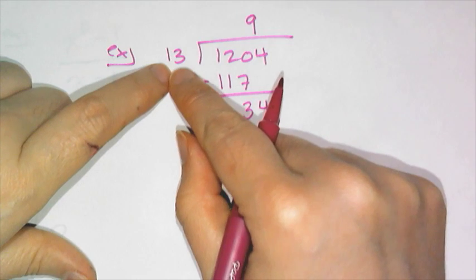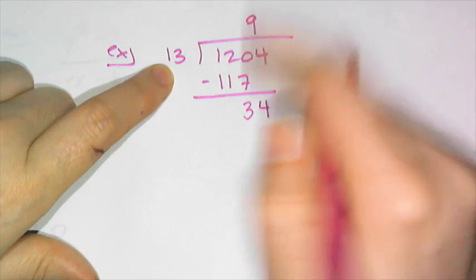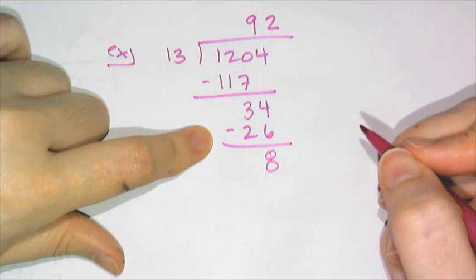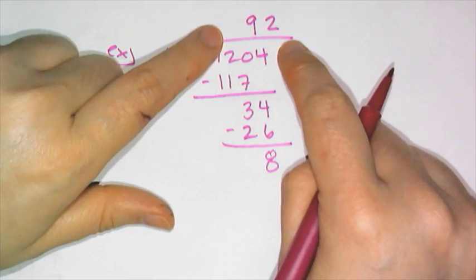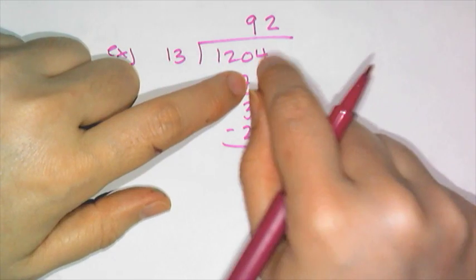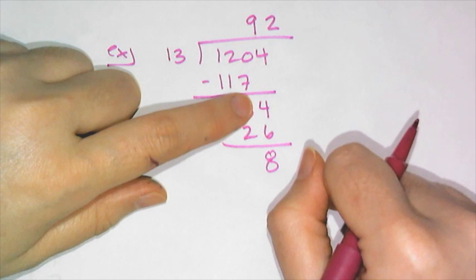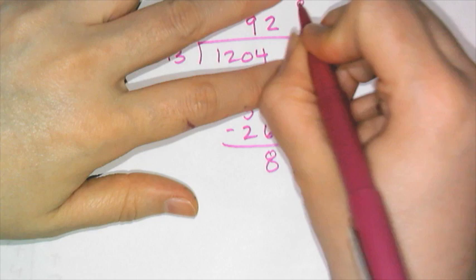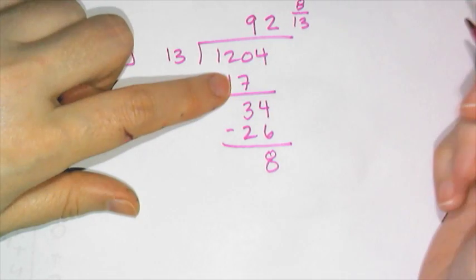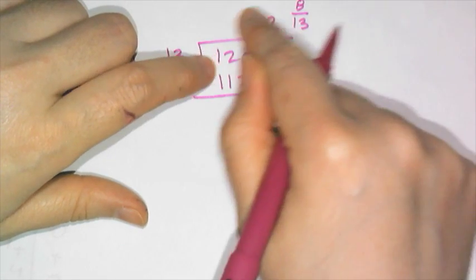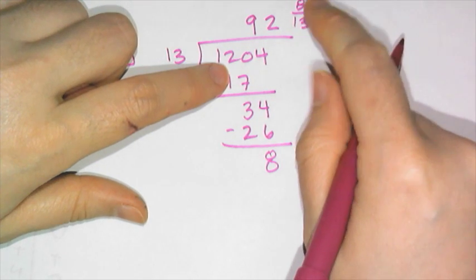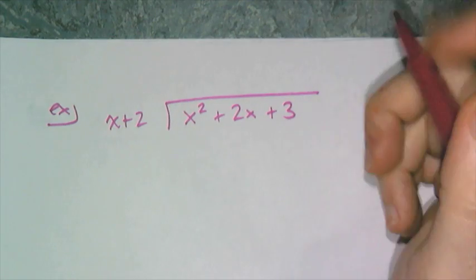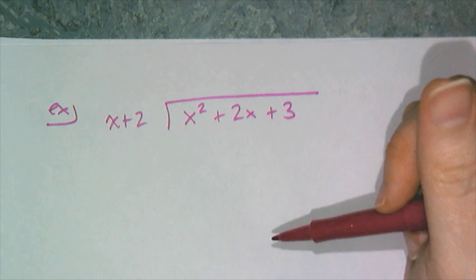I bring down the 4 and think: how many times does 13 go into 34? That's twice. I do the subtraction and get a remainder of 8. In elementary school you wrote 'remainder 8,' or you could extend with decimals. Or you can write it as a fraction — 8 over 13. That's the way we'll handle polynomial division: take the remainder and write it as a fraction with the divisor. Now let's do some division with polynomials.